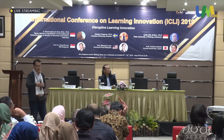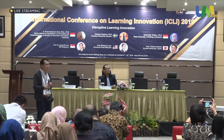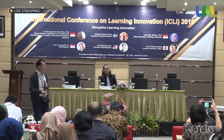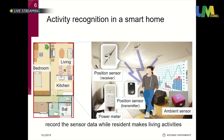Before moving to the education part, I want to introduce the latest ubiquitous technologies. Our smart home is a photograph with three rooms — a living room, bedroom, and kitchen — plus a bathroom and toilet. Students can actually live there; at most, one student lives there for one month. It's located inside the university, and I sometimes stay there too. There are many sensors installed throughout.